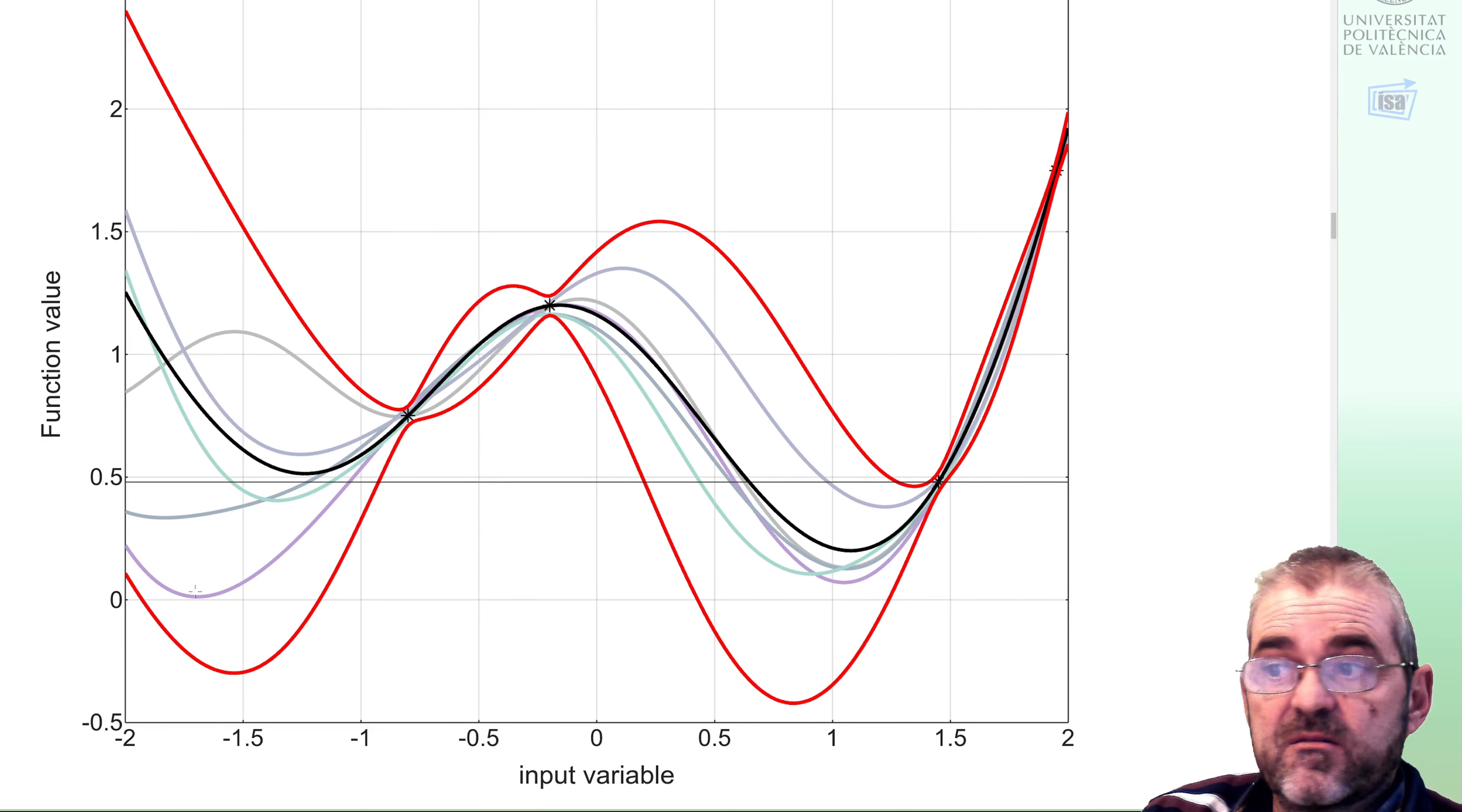If we wish to optimize, then we see that, for instance, this one has the global optimum here. Another one has the global optimum here. Here. The mean is here. This green stuff is here. Bayesian optimization is kind of understanding the information that is encoded in this posterior Gaussian process in order to recommend which is the point in which the global optimum may be more likely to be.